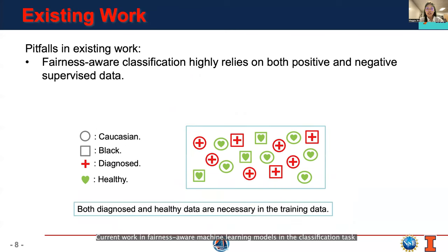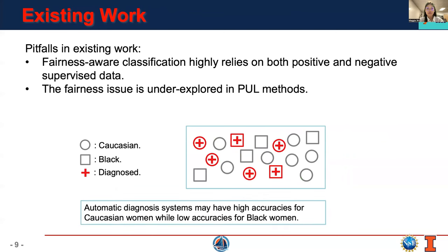Current work in fairness-aware machine learning models in the classification task highly rely on both positive and negative supervised data. In the breast cancer example, both diagnosed and healthy data are necessary in the training data. On the other hand, the fairness issue is still underexplored in PUL methods. For breast cancer, automatic diagnosis systems may have high accuracies for Caucasian women, while low accuracies for Black women.